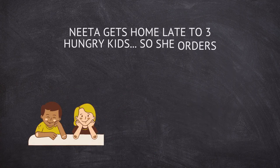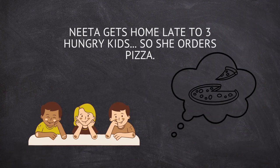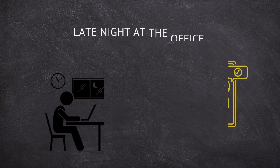The following evening, Nita gets home late again and her kids are hungry. She knows she shouldn't, but she decides to order them — you guessed it — pizza. What makes a pizza delivery service acceptable to a four, six, and nine-year-old?